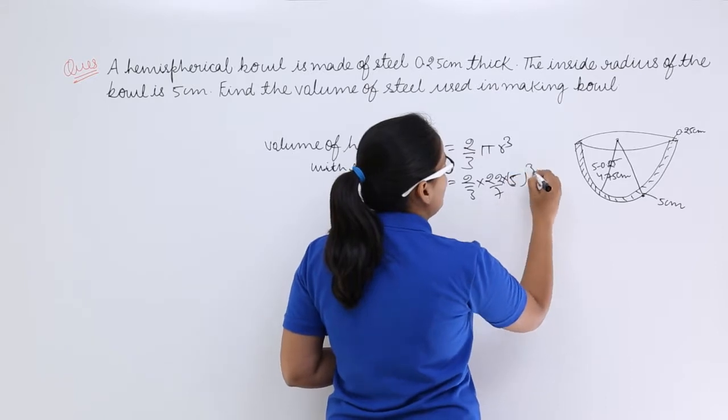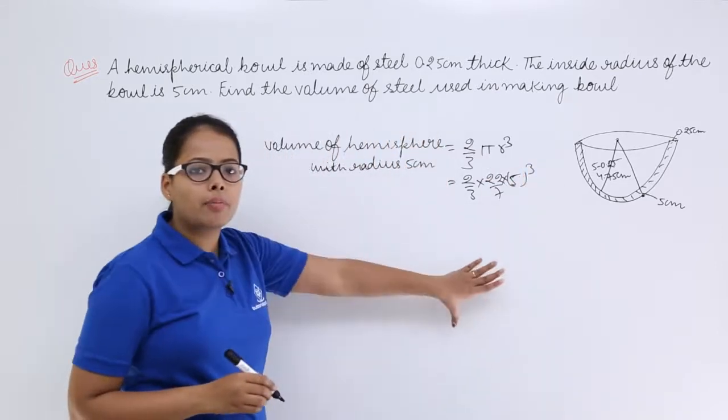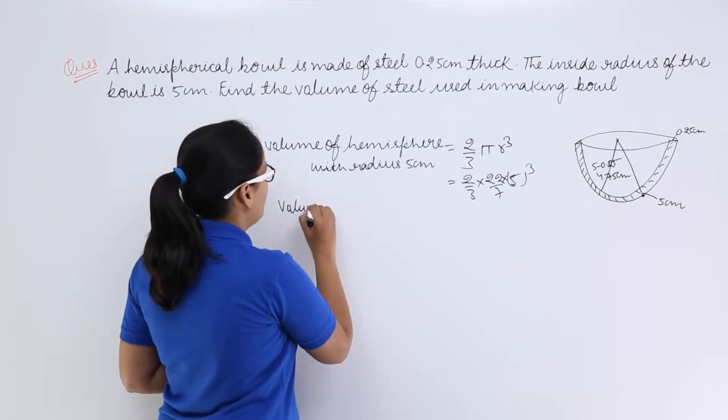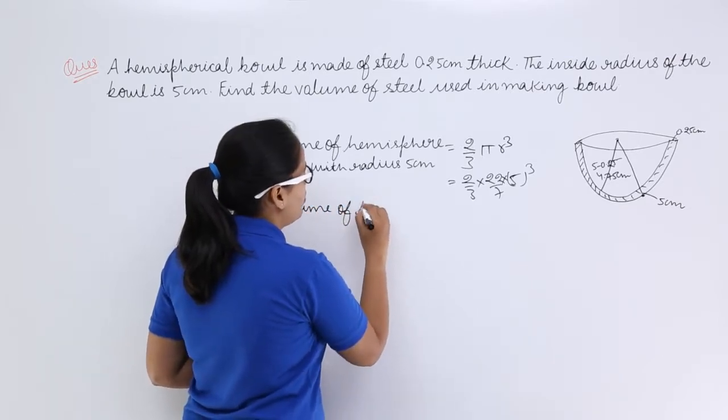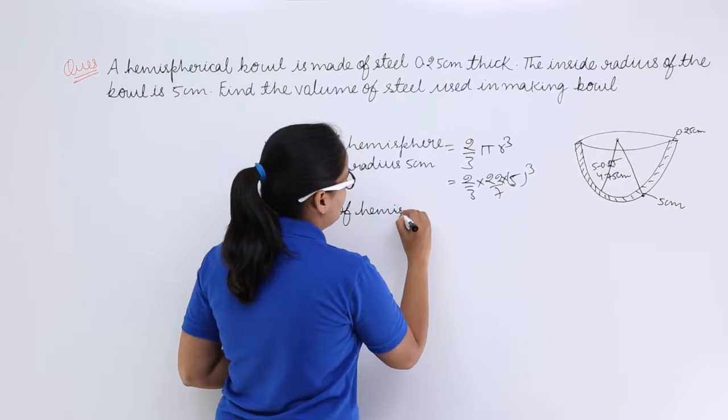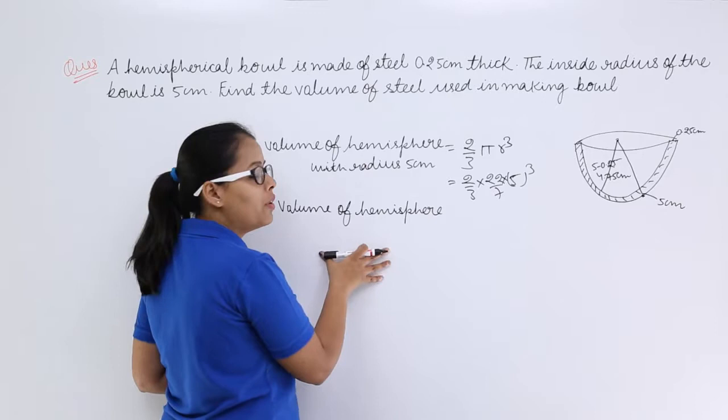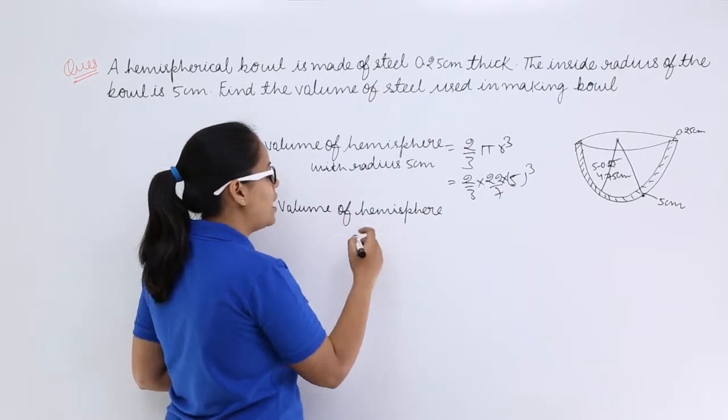This will be 5³. Let's keep this as it is. Now let's calculate the volume of the hemisphere. This was the volume of the outside hemisphere; this will be the volume of the inside hemisphere.